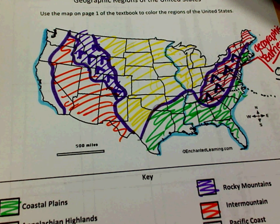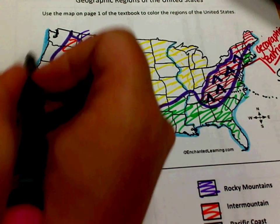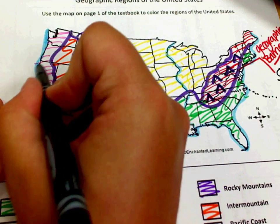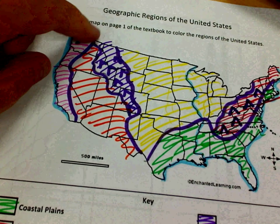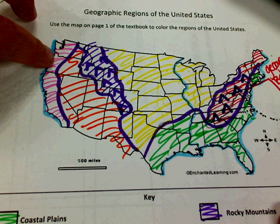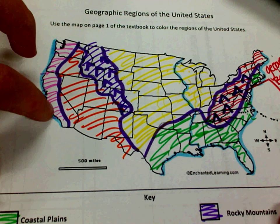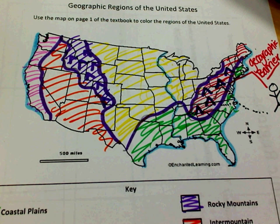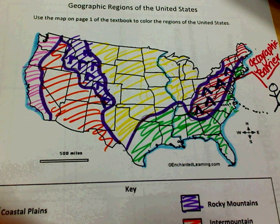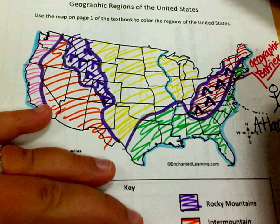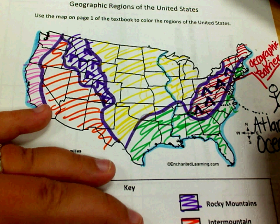And then finally, we have the Pacific Coast. The Pacific Coast is one we're not going to talk about very often, but it's important for you to know generally what it is. The Pacific Coast is mountainous and rocky. This right here is the Pacific Ocean — that's why this is called the Pacific Coast. I'm going to label this real quick: this over here is the Atlantic Ocean.